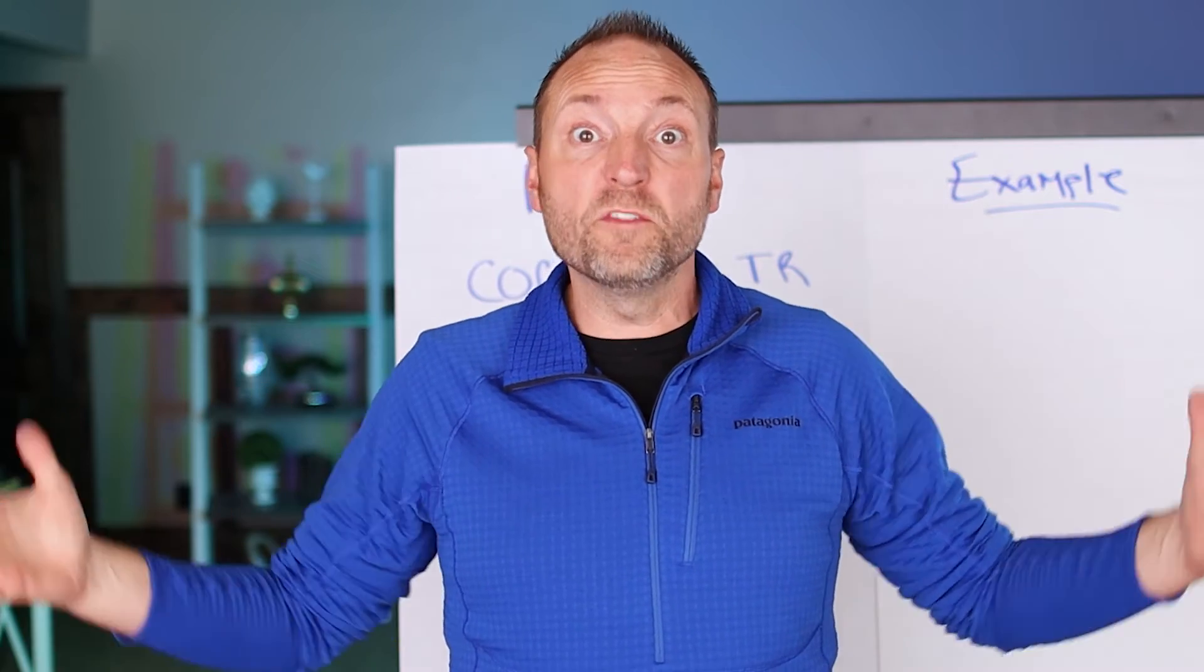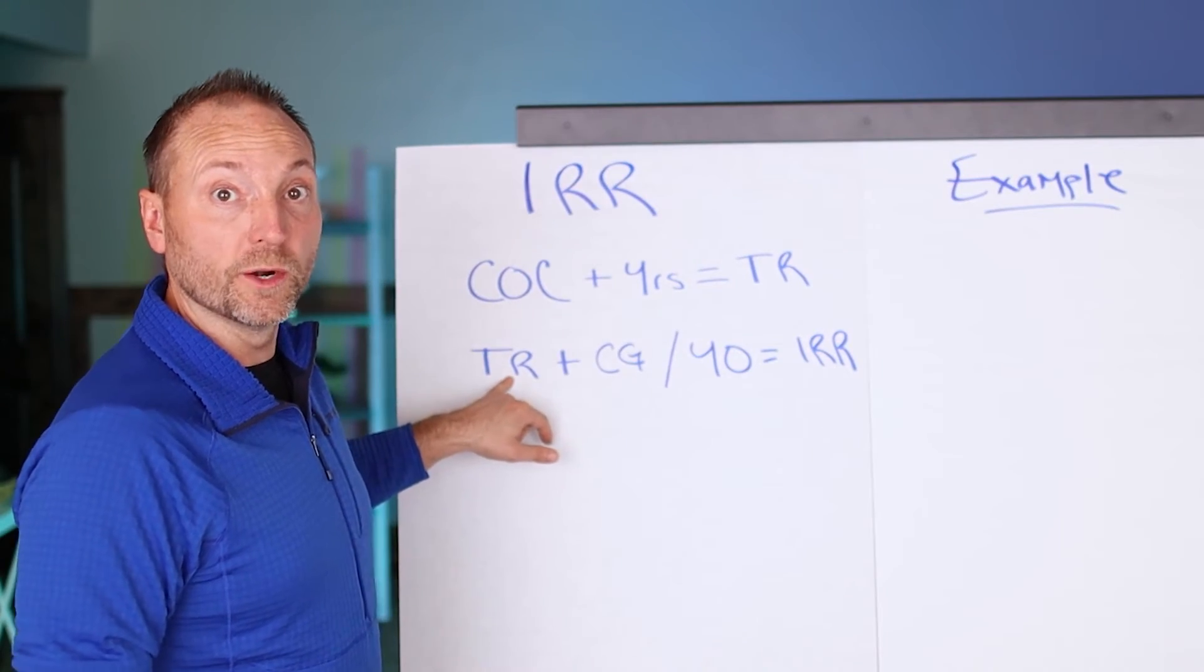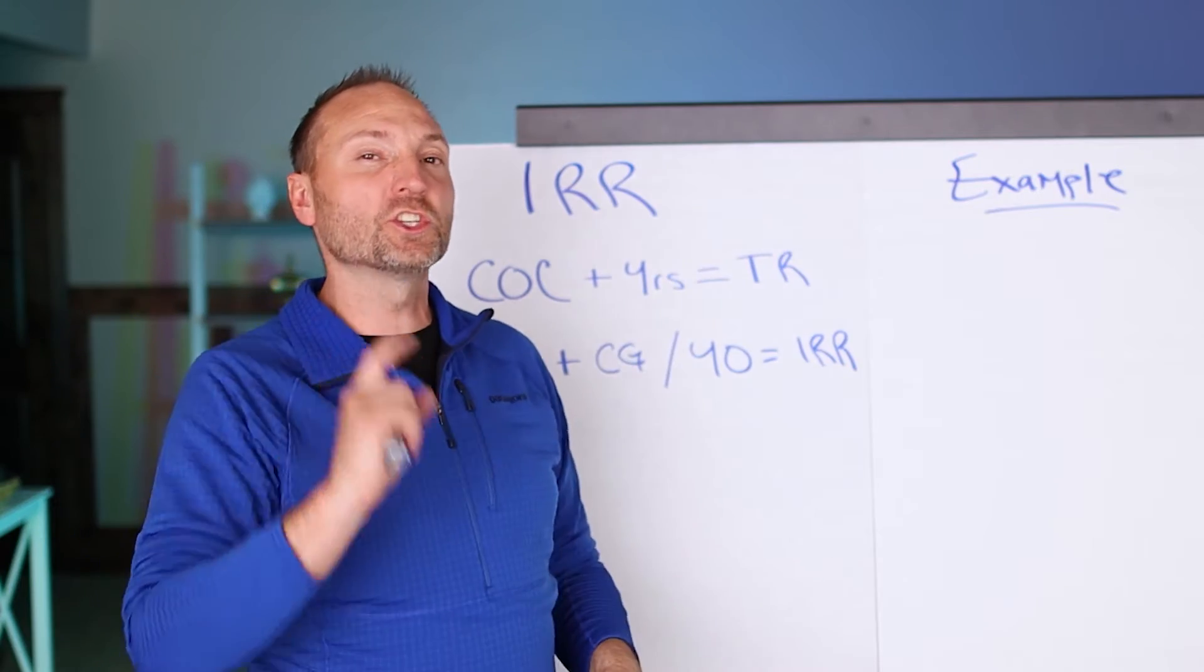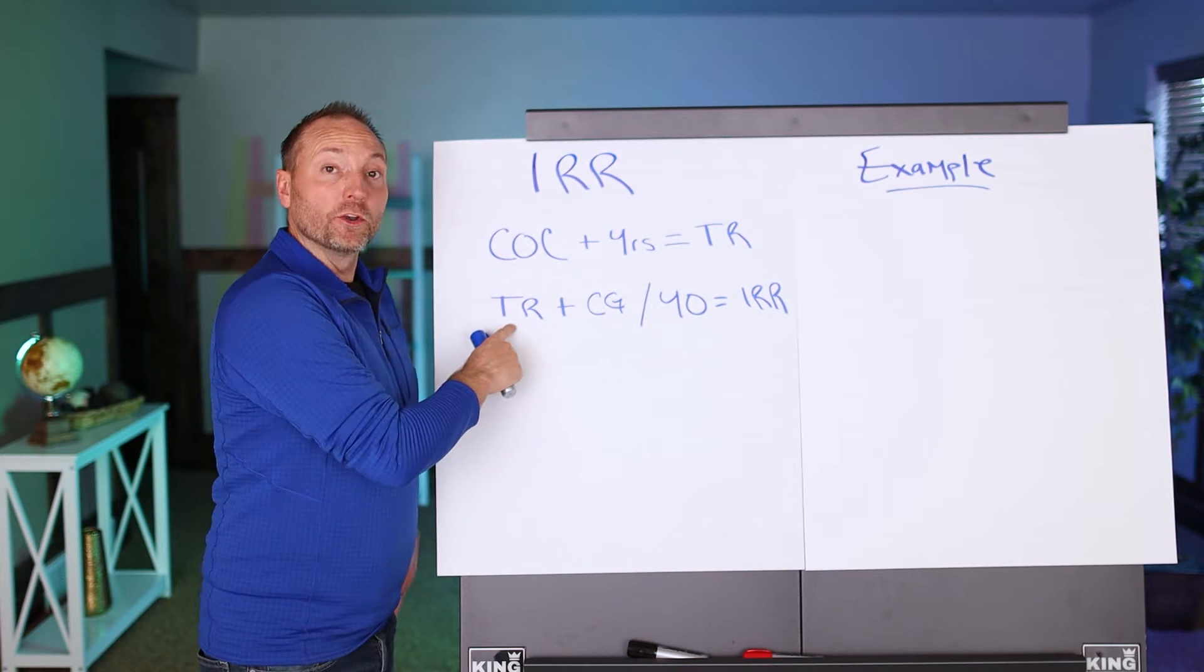So year one you make $6,000, then year two you make $7,000, that's $13,000. Year three you make $8,000, now we have $21,000. So we've made $21,000 and we bring that down to a total return.